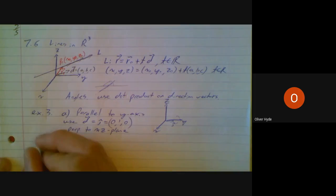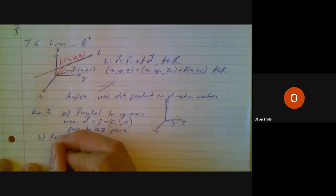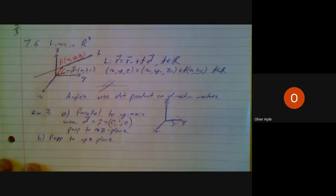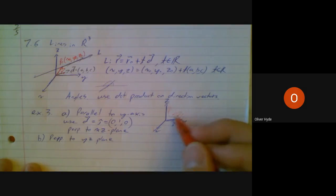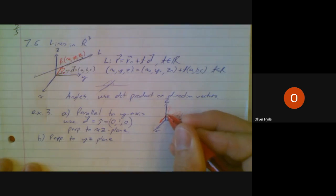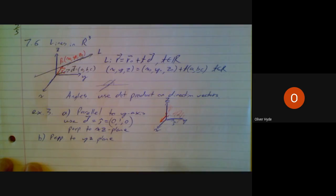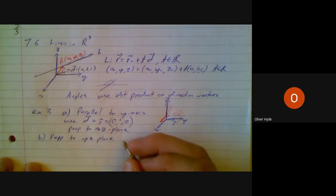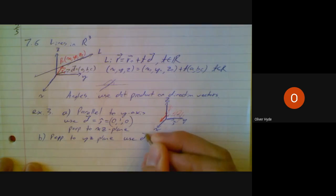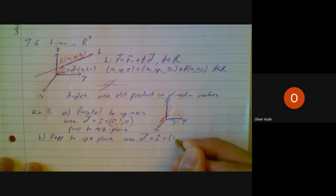Question B asked us to find the equation of a line that was perpendicular to the y,z-plane. Here's my y,z-plane. It actually looks like the surface of my page. Perpendicular to the y,z-plane sounds like I could use the x-axis or the opposite of the positive x-axis. So I'm going to use d is i-hat or 1, 0, 0.